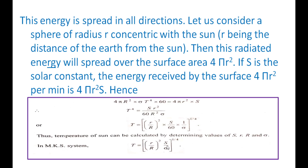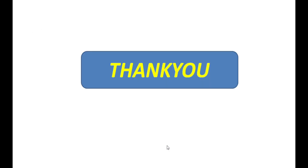These two — Angstrom's pyrheliometer and the temperature of the sun — are the last topics in Unit 5. I hope you all understand. Thank you.